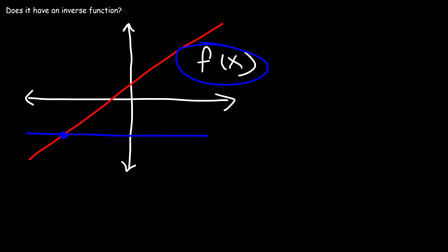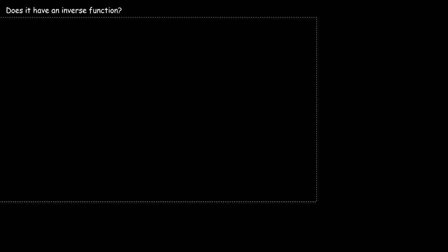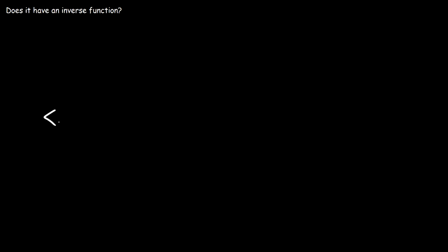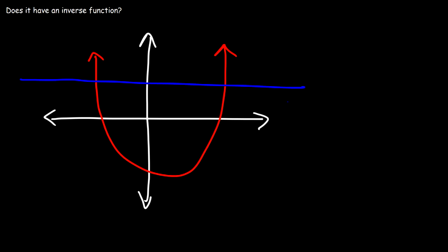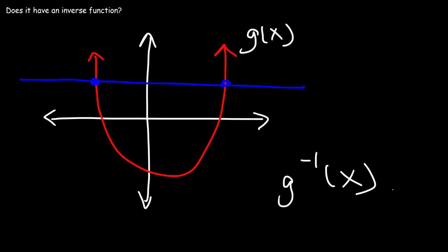So let's look at some other examples. What about this parabolic function? Does it have an inverse function? Well, if we draw a horizontal line, notice that it touches the horizontal line at two points. So therefore, let's call this function g of x. g of x does not have an inverse function. If you try to draw the inverse relation, it's not going to be a function.